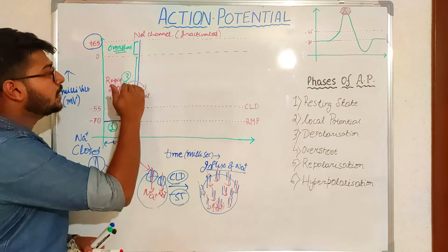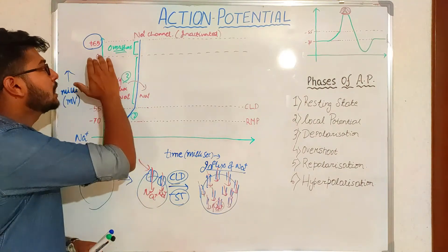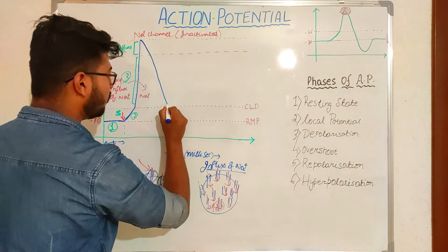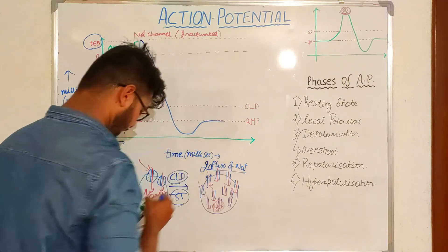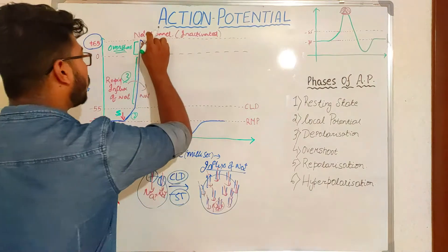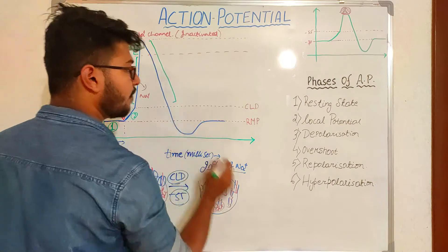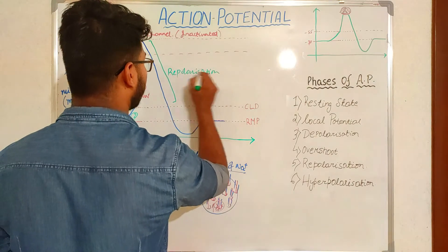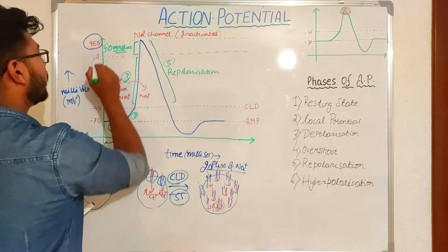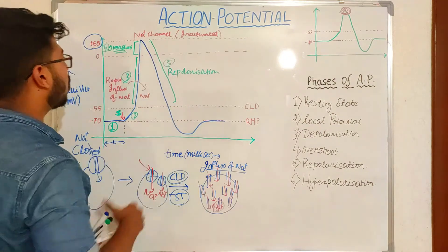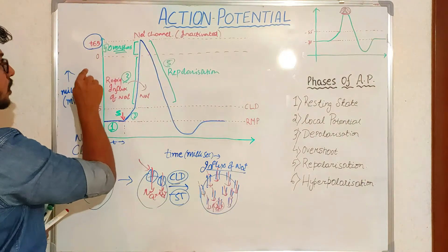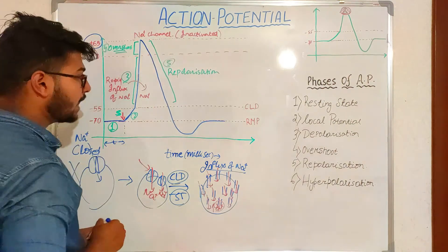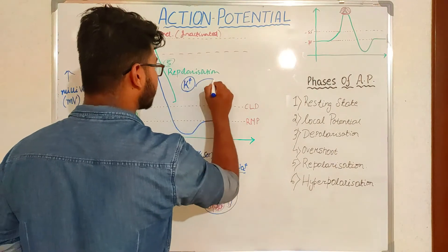The overshoot is the portion of the graph where the membrane potential of the neuron is above zero. After this, the graph will fall. This falling phase is known as repolarization — it is the fifth phase. During repolarization there is a decrease of membrane potential from positive toward negative: the charge moves from positive toward negative values.